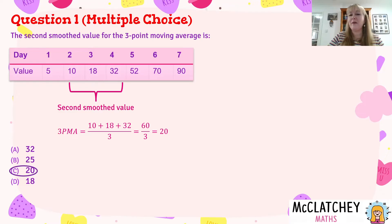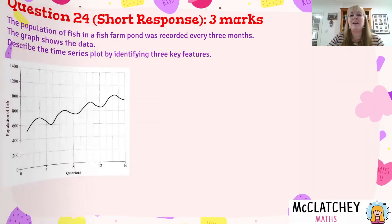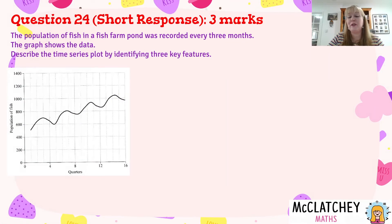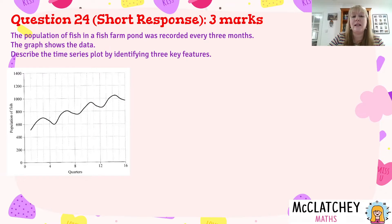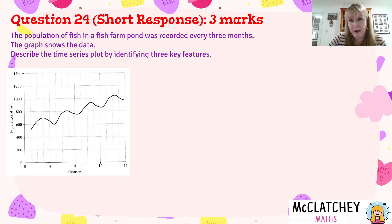Okay, so that was an easy one. Let's move on now to the short response question. The population of fish in a fish farm pond was recorded every three months. The graph shows the data. Describe the time series plot by identifying three key features — and this was worth three marks, one mark for each feature.